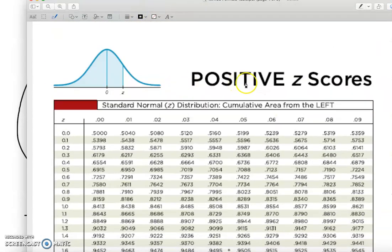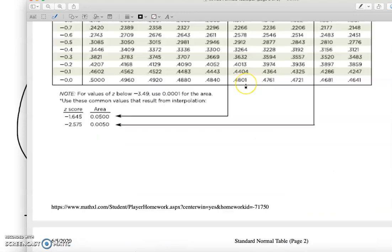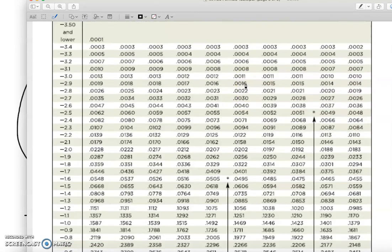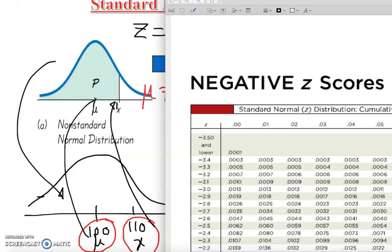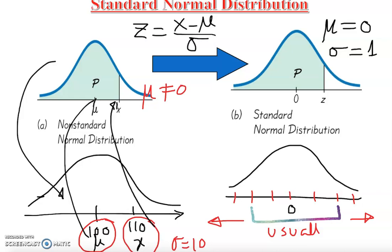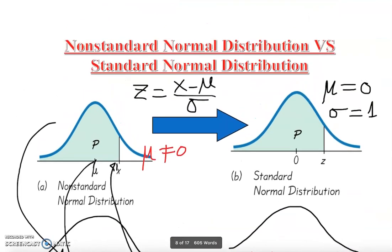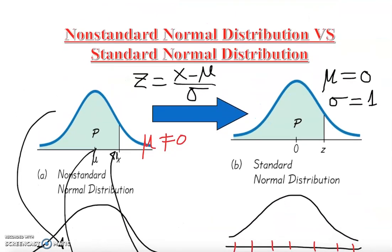To use the normal curve we use both the positive z-score table and the negative z-score table. I hope you understand the difference between the normal curve and the standard normal curve versus the non-standard normal curve. Thank you very much for watching this video.